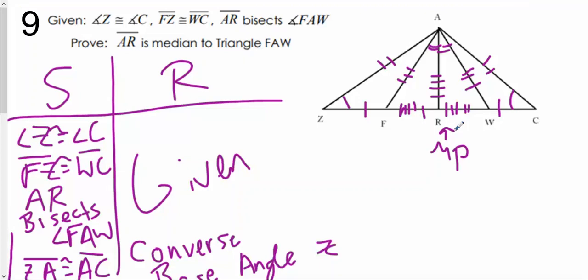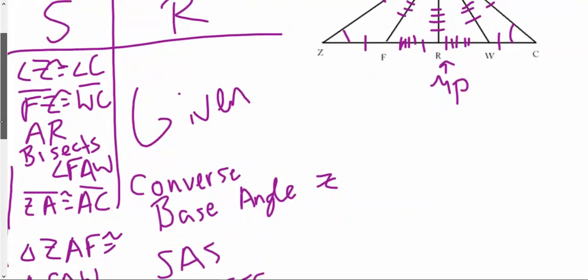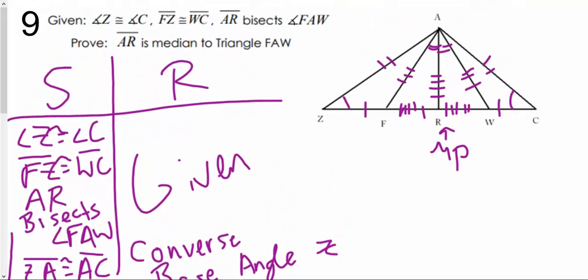There you go guys. That's probably one of the harder proofs. Mostly the big part that I think is a little bit confusing is the converse of base angle. There's more than one way to prove this, but this is probably the quickest. There you go. All right. Thank you. And make sure you took notes on that. If you didn't, rewatch it and take all the notes, good job.